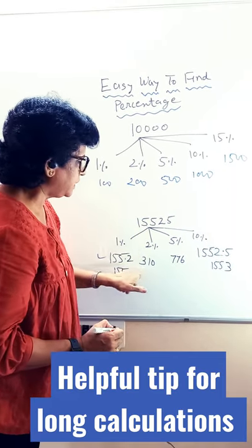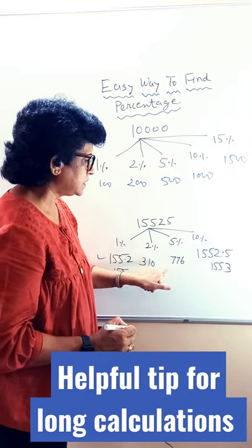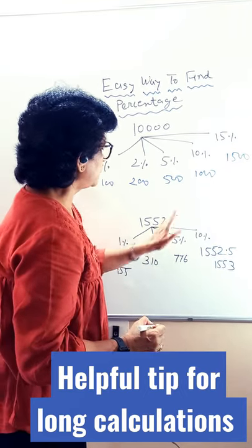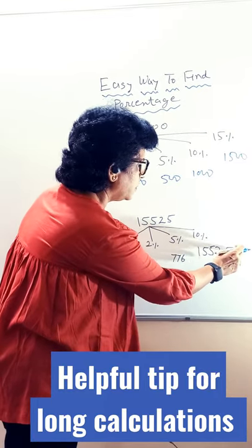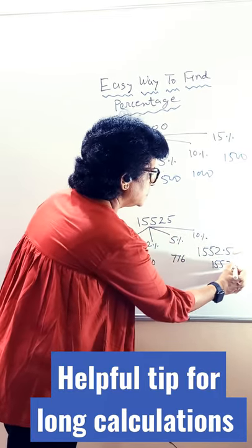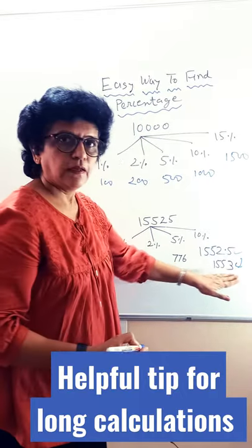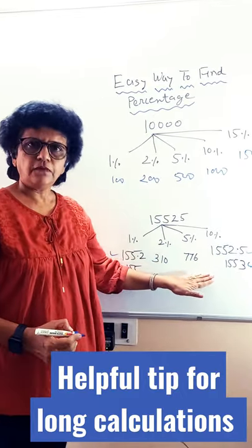For 2% double of it, 310. For 5% 776. And for 10% hide only 1 digit. 155.2, 0.55 is there, so make the next digit 155.3. Like this, you can do for any figure.